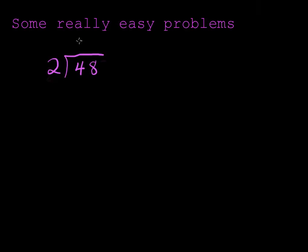We'll do 2 into 48. 2 goes into 4 two times, 2 goes into 8 four times. Now you can check your answer: 24 times 2. I get 2 times 4 is 8, 2 times 2 is 4. 48 is the number I started with, so I know it's right.